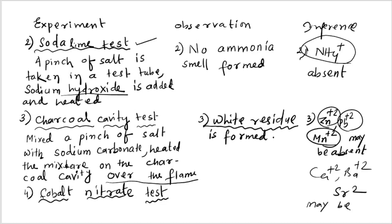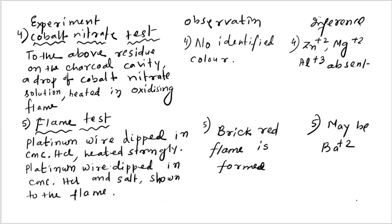After that, we proceed to the cobalt nitrate test. One drop of cobalt nitrate is added to the white residue and heated in an oxidizing flame, but no identified color is formed. This means Zn²⁺, Mg²⁺, and Al³⁺ are absent.